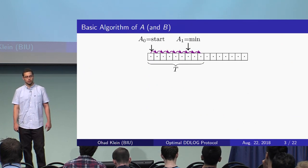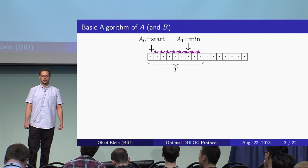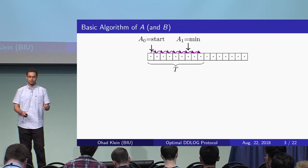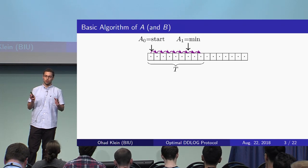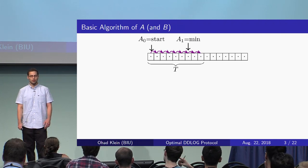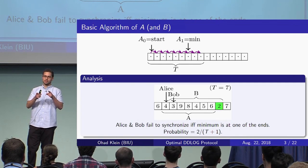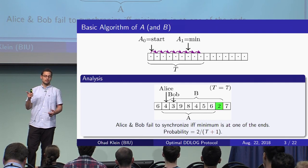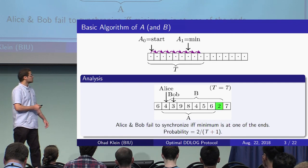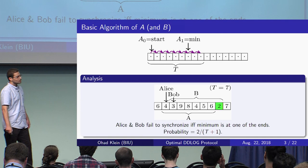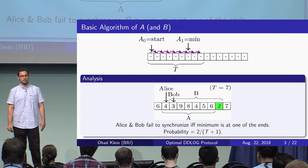Let us now view a simple solution for the spaceships problem. In this solution, each of the spaceships reads T consecutive cells starting from the arrival point. After reading all these cells, they go back and stop on the minimal value they encounter. Since Alice and Bob start on adjacent cells, the only way they will not find the same minimum is if the minimum is on one of the cells only one of them read. There are only two such cells, and this means that the probability for Alice and Bob to not synchronize is about 2 over T.